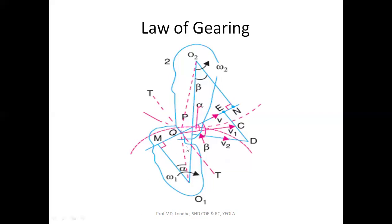Velocity vector V1 of gear one is perpendicular to its radius at the point of contact, and V2 is the velocity vector of gear two, also perpendicular at the point of contact. As per the law of gearing, the ratio of these two velocities must remain constant. When this ratio is constant, only then can we say the gear pair is formed properly and satisfies the condition for correct gearing.